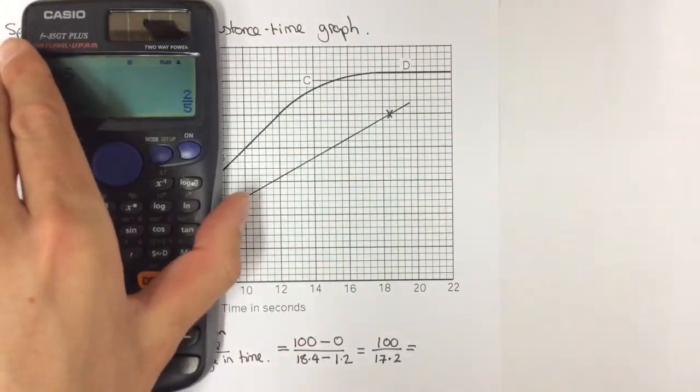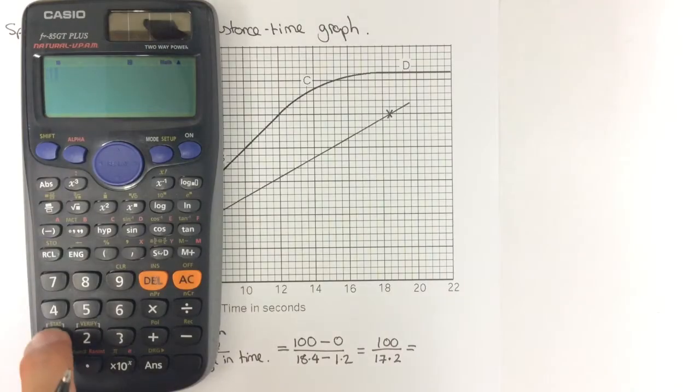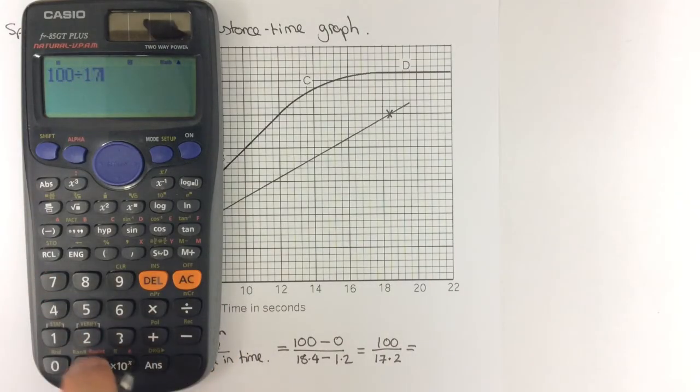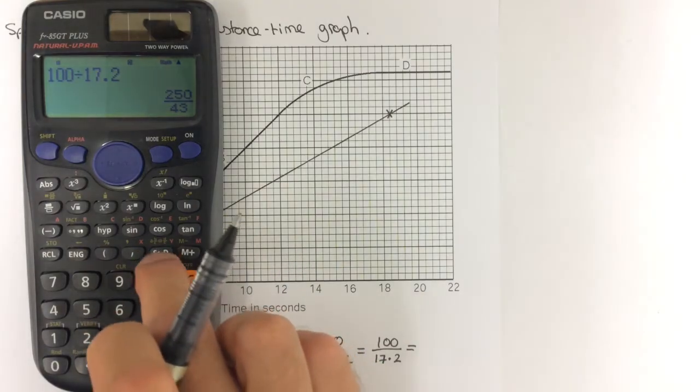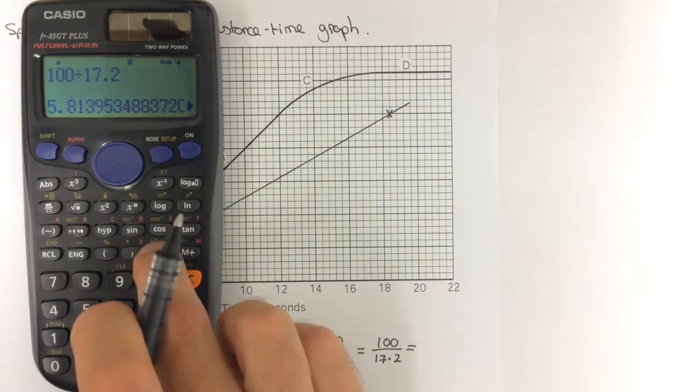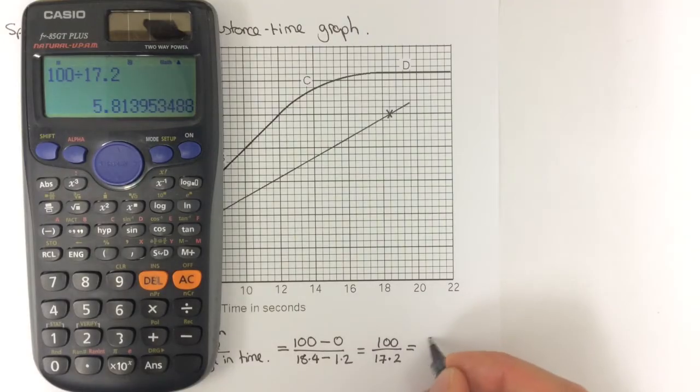And I can get my calculator now, and do 100 divided by 17.2, which would give me a fraction. So, I can press this button to get my decimal, and I'd do that as 5.8 meters per second.